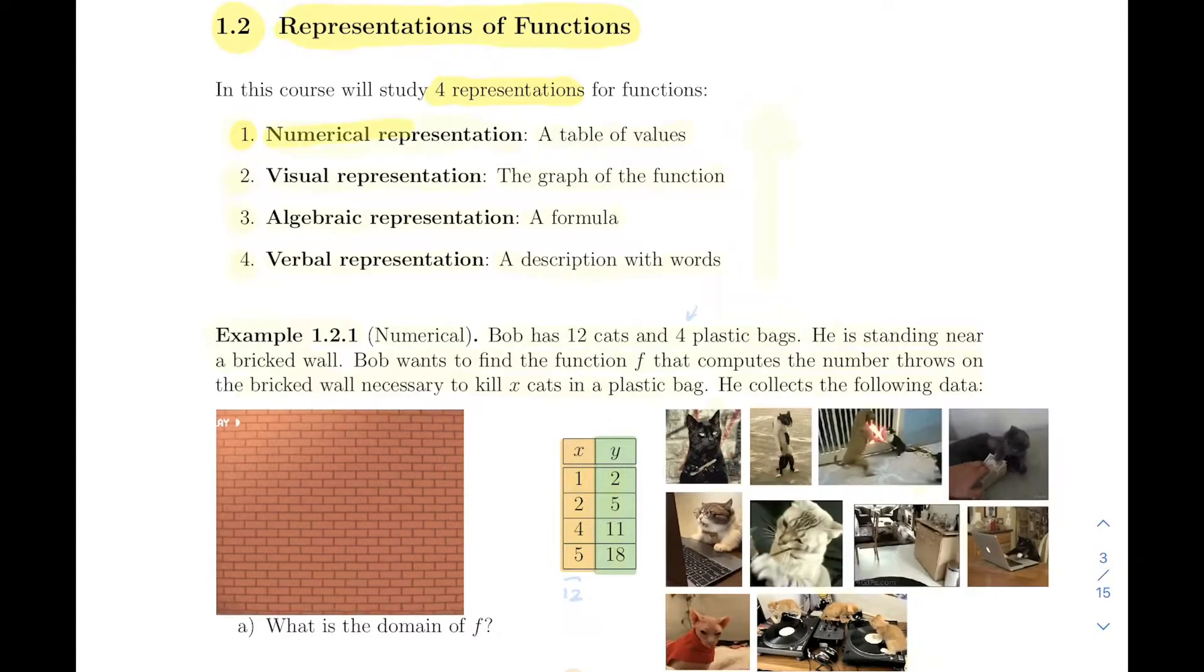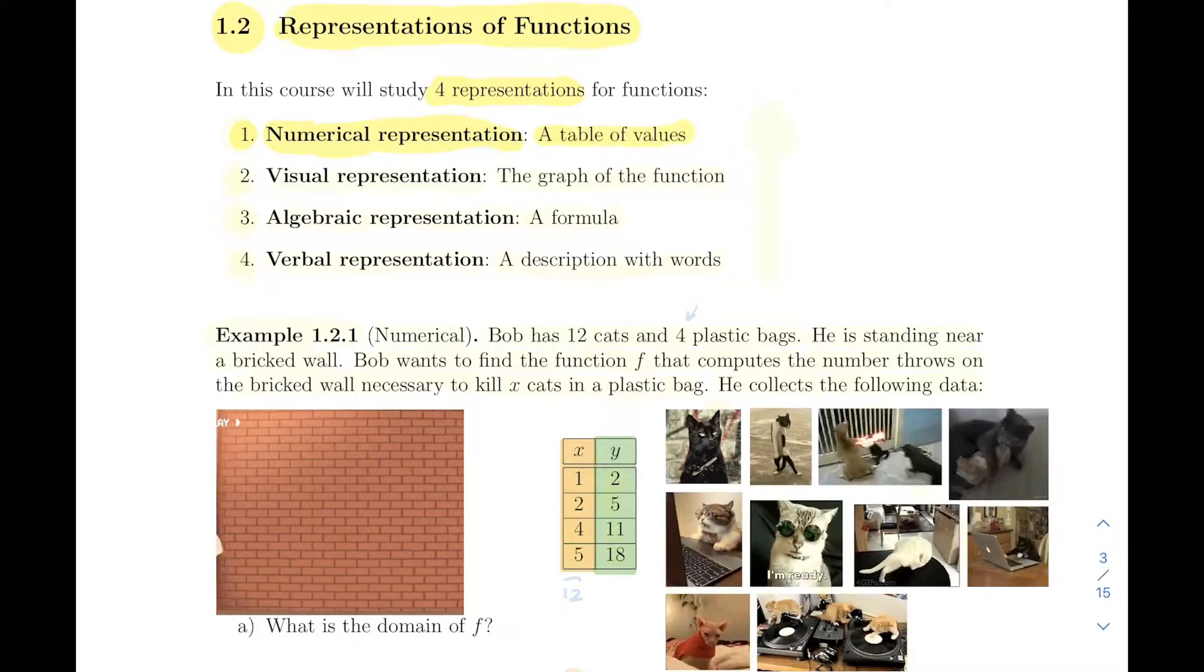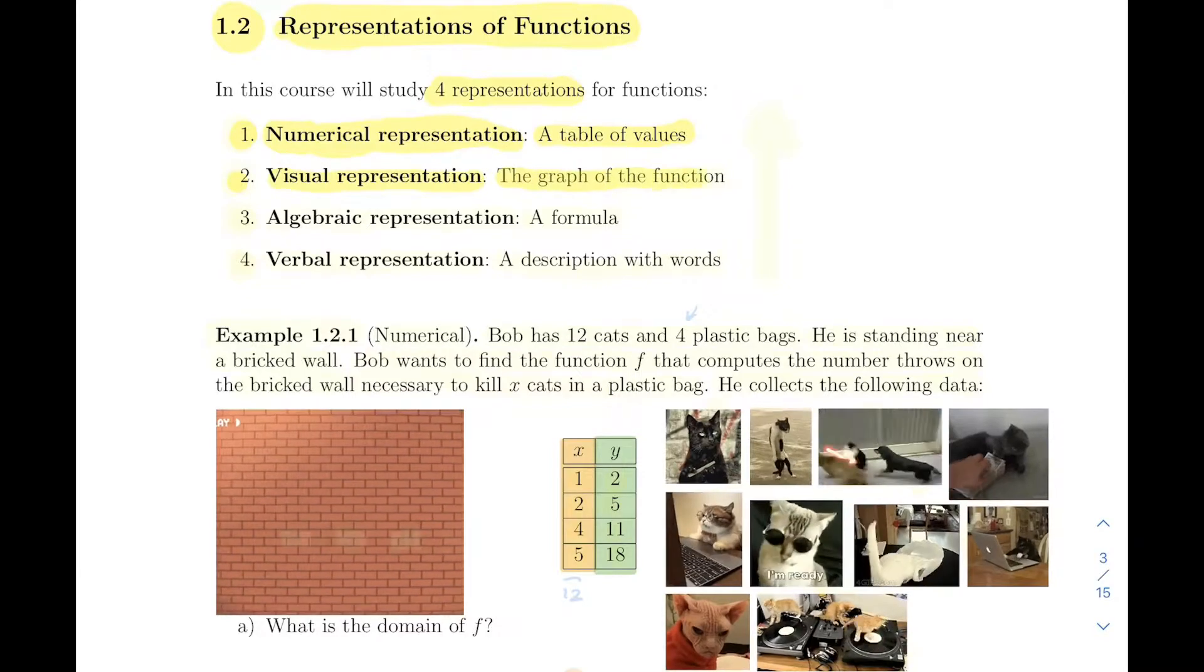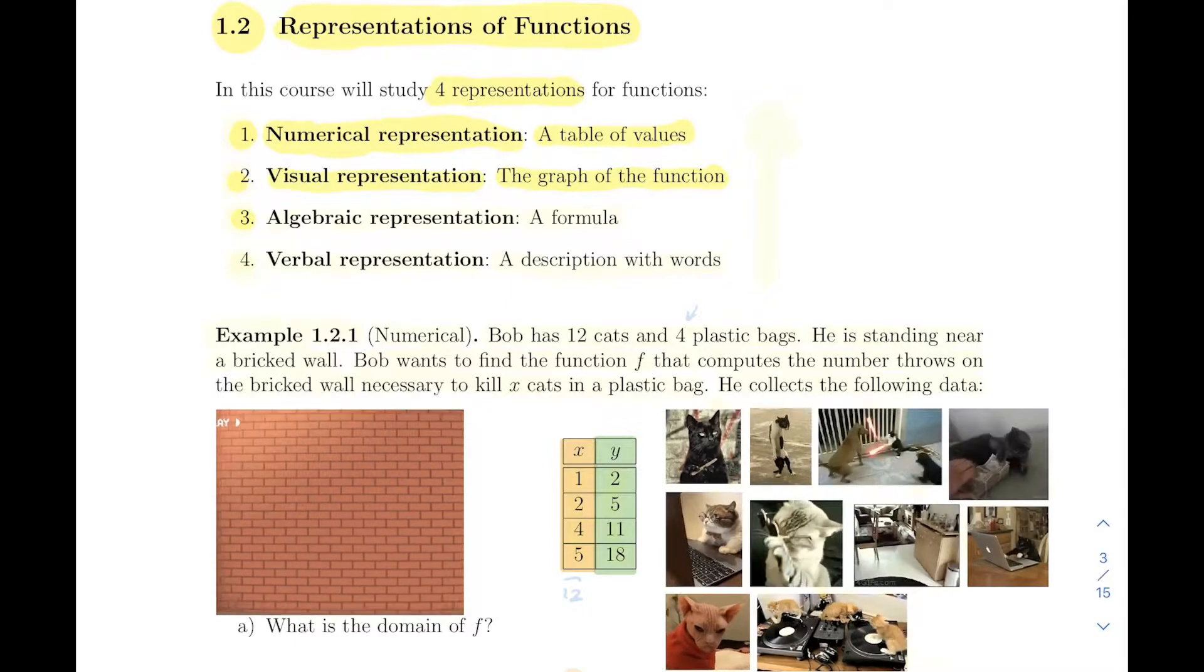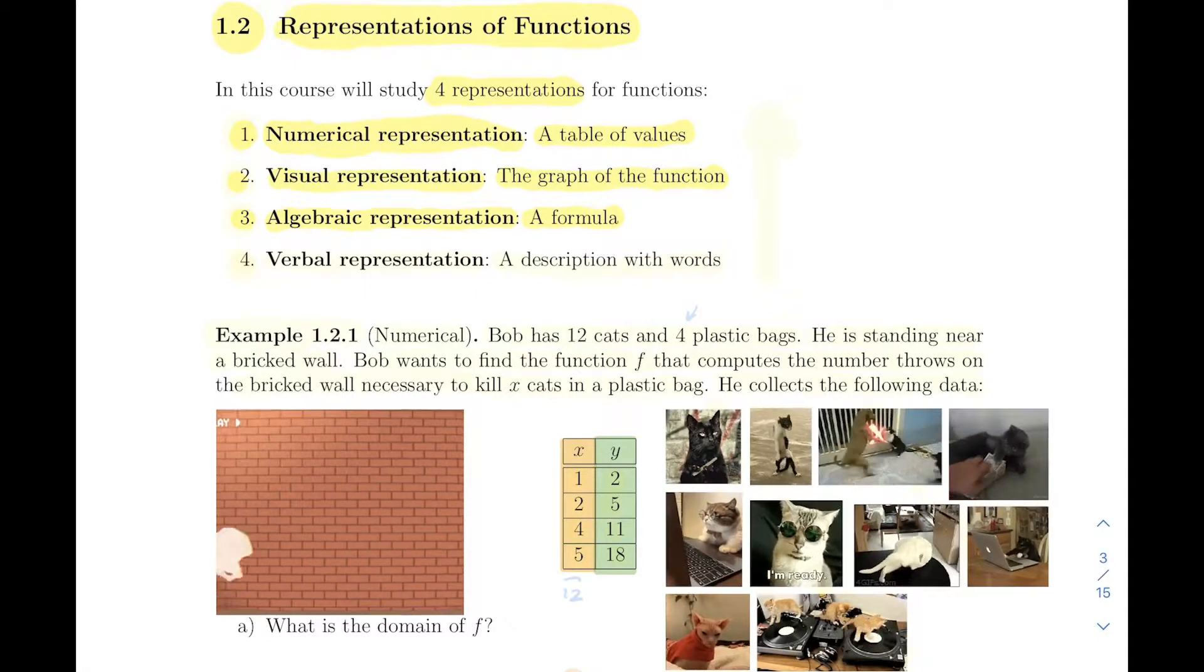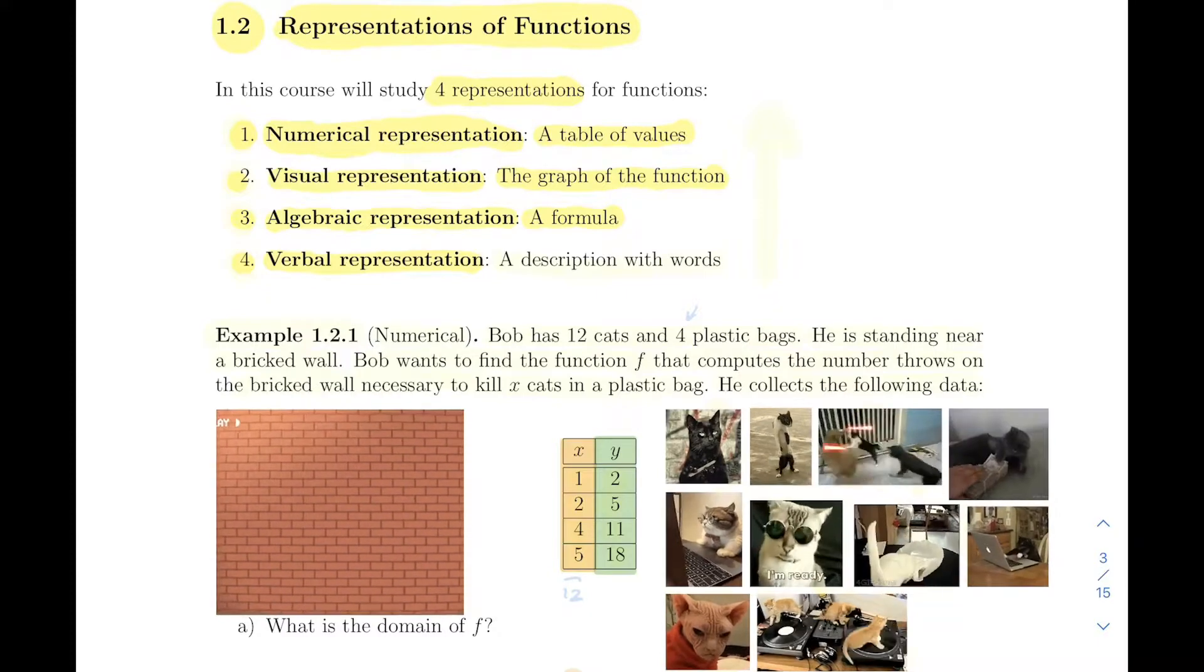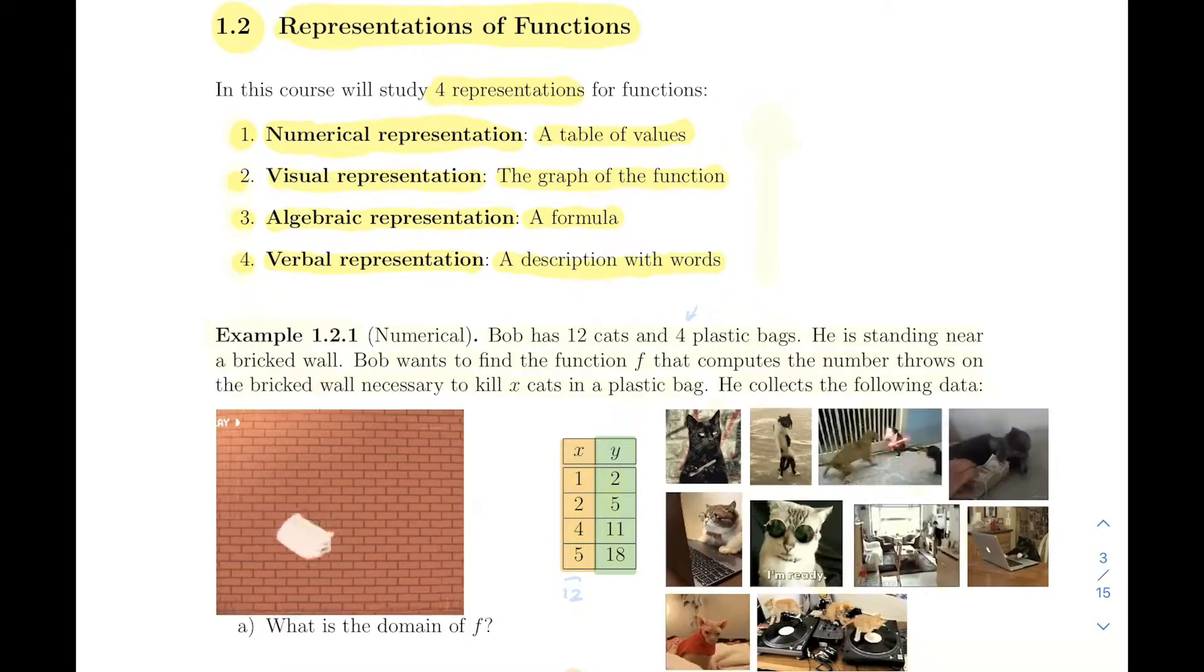The first one is numerical representation - a function given to us as a table of values. The second way is visual representation, when a function is defined by its graph. A third way is the algebraic representation, when the function is given through a formula. And then sometimes a function is just given using words or a description - a verbal representation. The goal is to simply go through four examples, one of each kind.